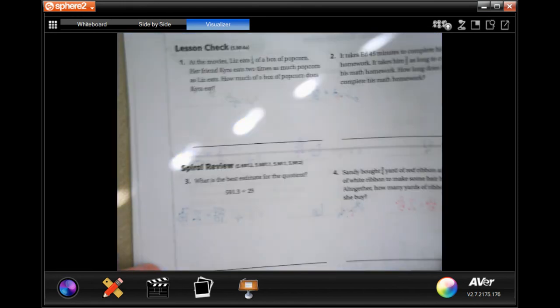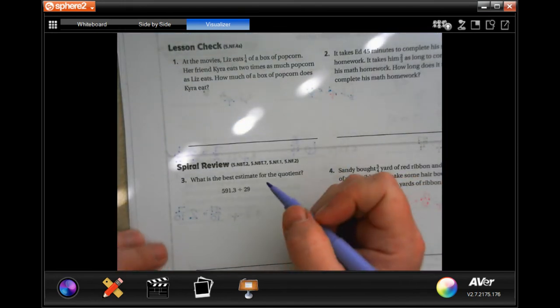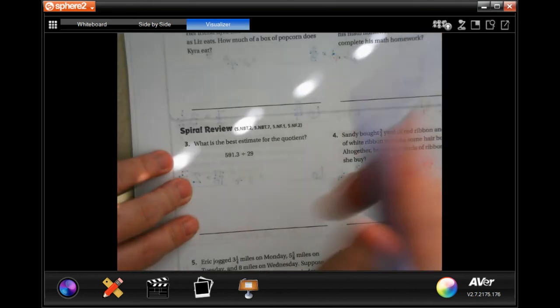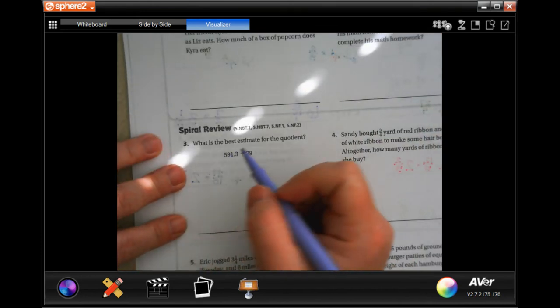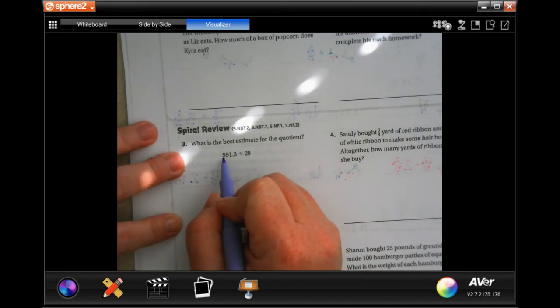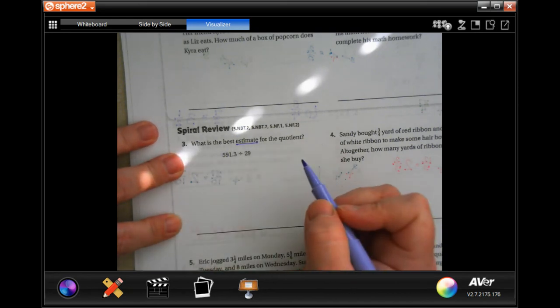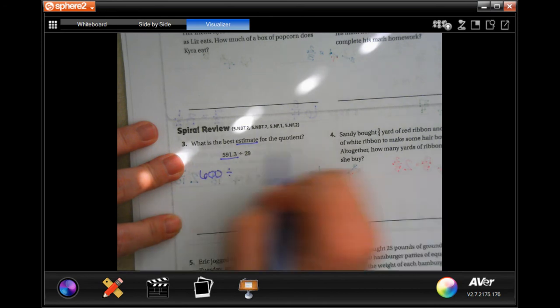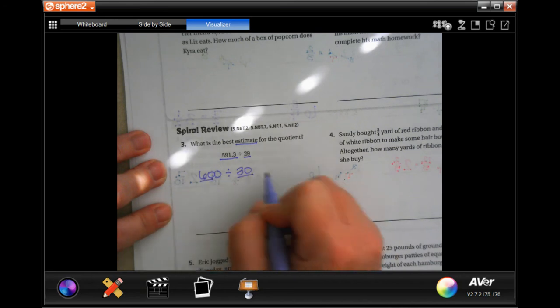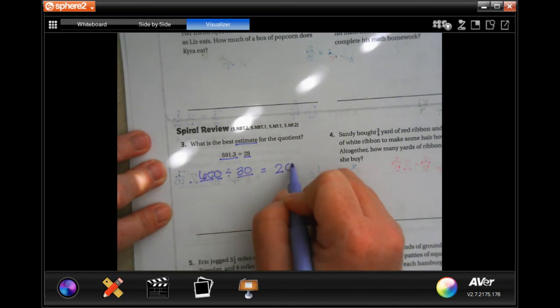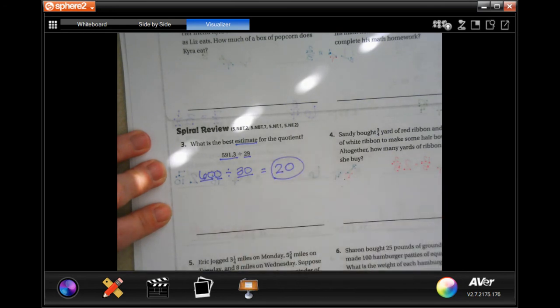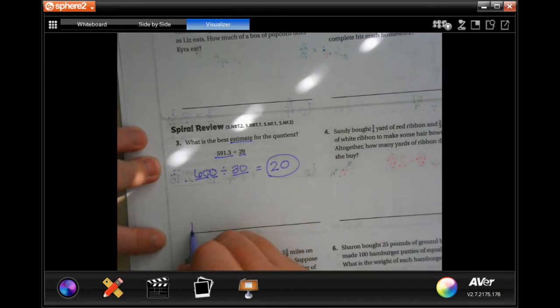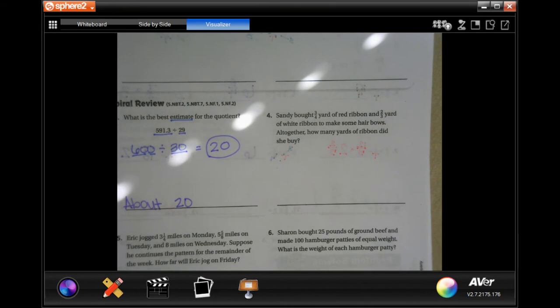You guys are going to do the lesson check, just like always, and we're going to go ahead and do this spiral review. So, 590, it says, what's the best estimate. That estimate's an important part here. Because 591, I would round that to 600. And 29, I would round that to 30. Well, 30 goes into 60 twice, and then I just have an extra zero. 20. Done. So, about 20. It asks for an estimate, so it's about.